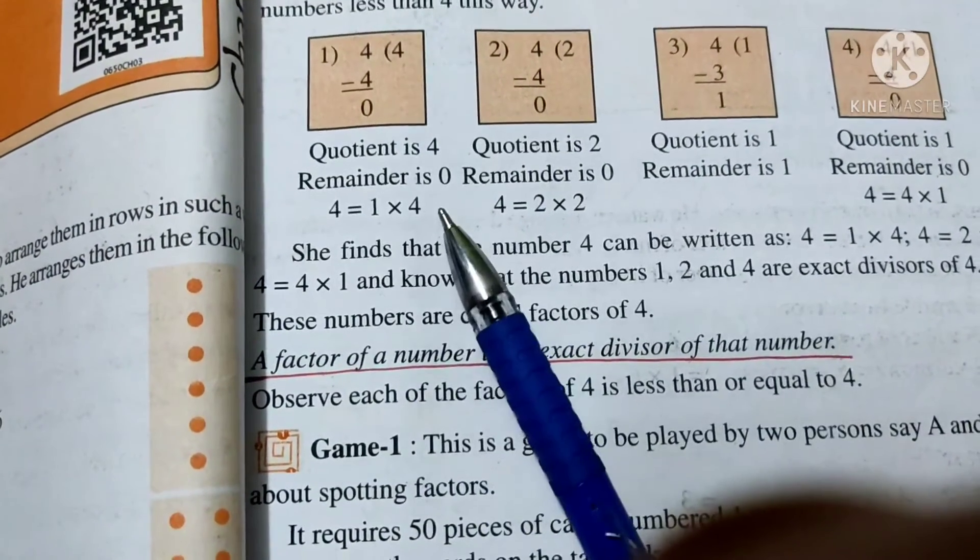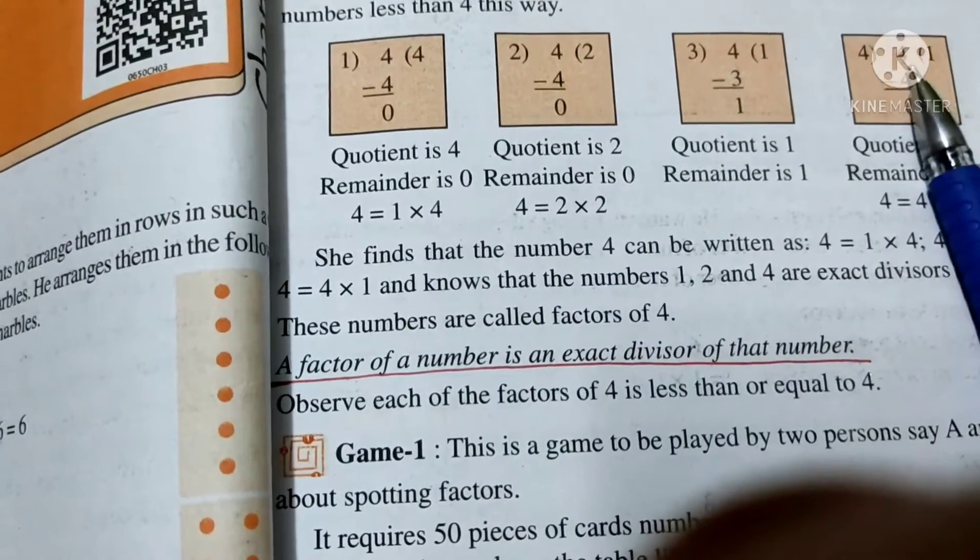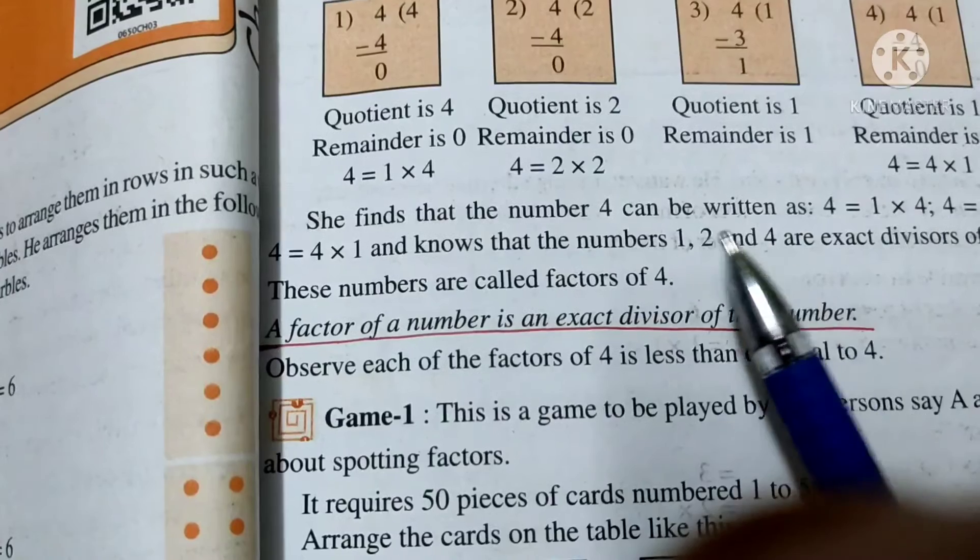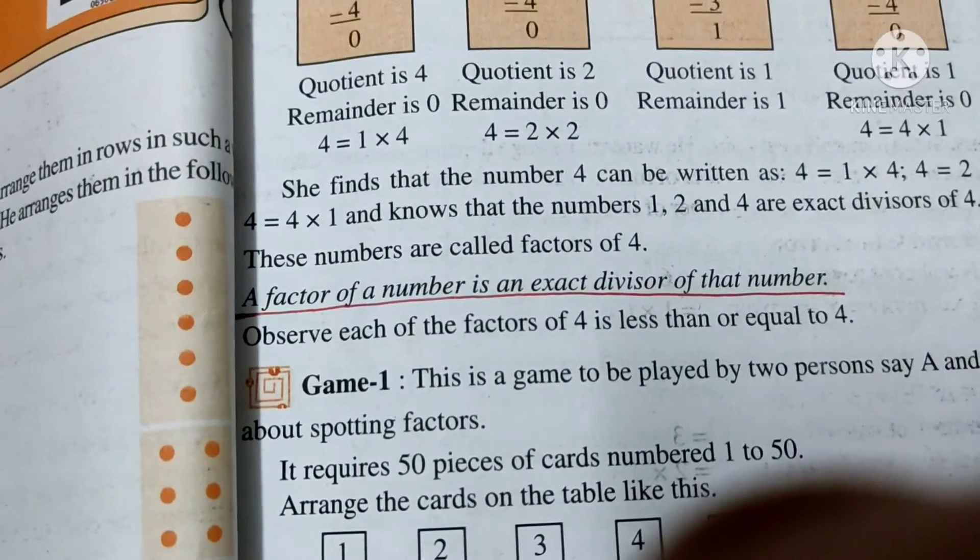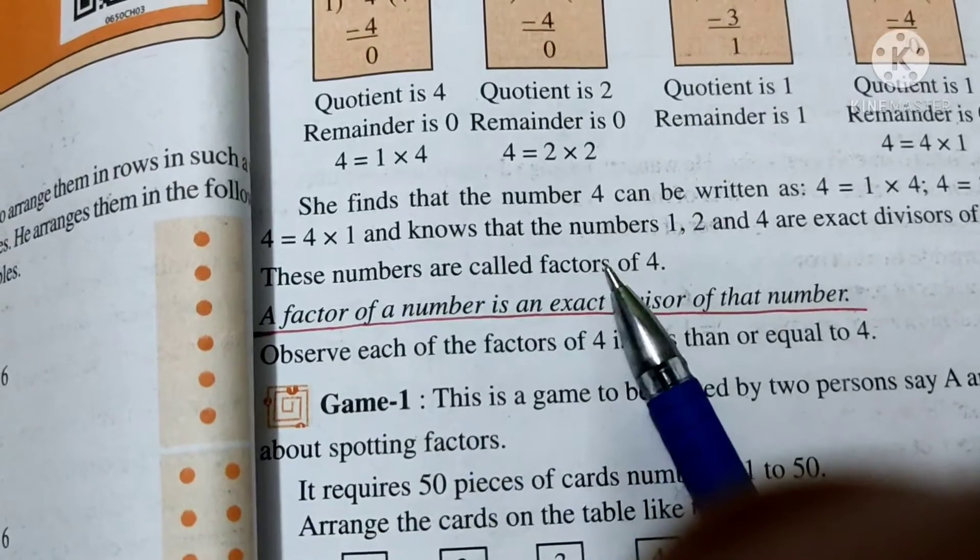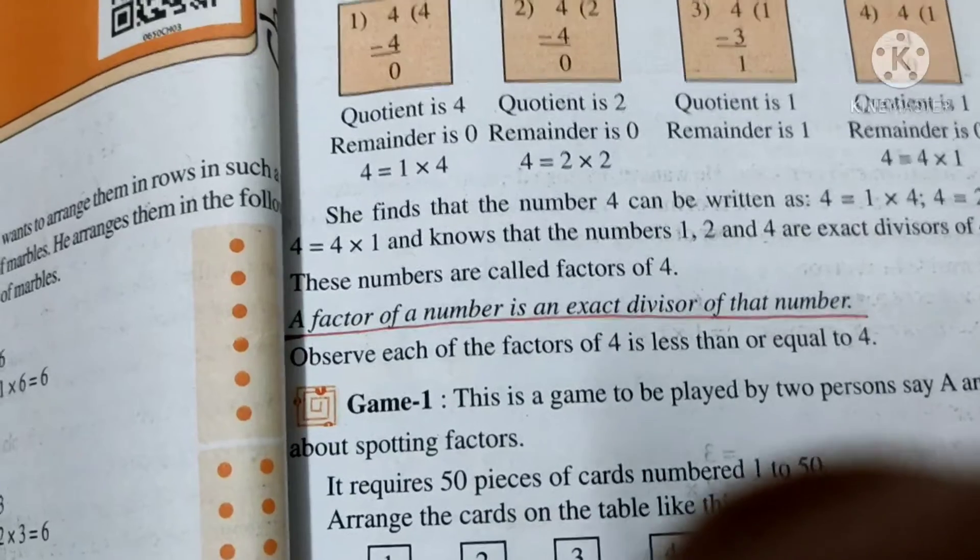So the cases in which we are getting our remainder 0 are 1, 2, 4. So here they have written 1, 2, 4 are exact divisors of 4. Hence, they are called factors of 4.